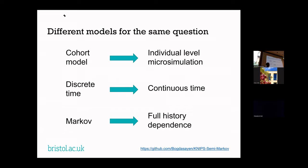We were thinking of changing this model from a cohort Markov model into an individual-level micro simulation — switching from discrete time (monthly or yearly cycles) into continuous time, and moving away from Markov and semi-Markov to full history dependence. So we're going to a general micro simulation in continuous time.